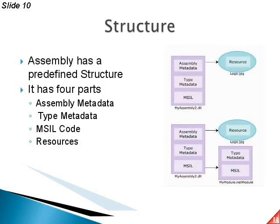The structure of an assembly has four parts: assembly metadata, type metadata, MSIL code, and resources. Assembly metadata is a collection of information available in binary format in a portable executable file, including version information. Type metadata contains declarations of every type and its members — methods, fields, properties — present in the assembly.